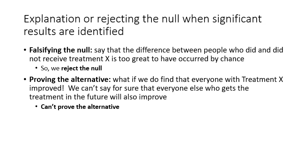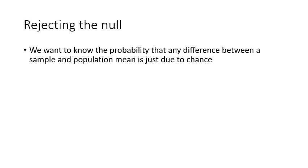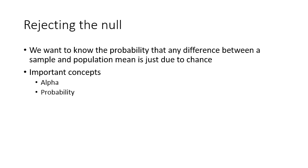When doing hypothesis testing we use specific terms — either rejecting the null or failing to reject the null. We reject the null based on probability. We're looking at the probability that the difference between the sample and the population was due to chance or not. We do this through two important concepts: alpha and probability. Probability means we use the sampling distribution as a probability distribution to state that with a certain amount of certainty, it's going to be that probability of having occurred by chance.